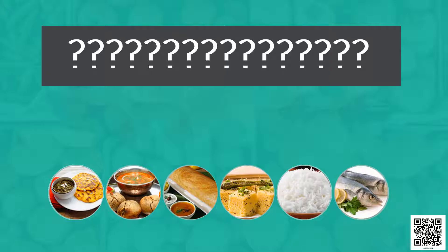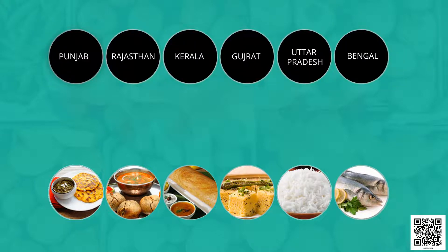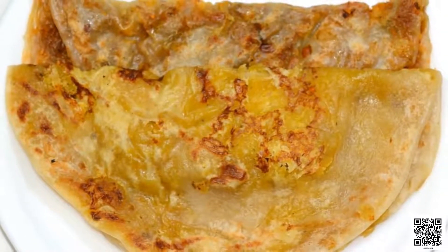First of all, let us get knowledge about different food materials and items. In the figure shown to us, there are different food items shown under different states. Can you tell me the name of famous food items statewide? In Punjab, makki ki roti and saag is very famous. Rajasthan is known for dal bati. Kerala is known for dosa and sambar. Gujarat for dhokla, Uttar Pradesh for rice, and West Bengal for fish.